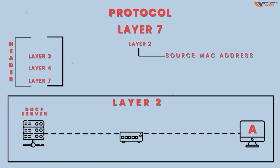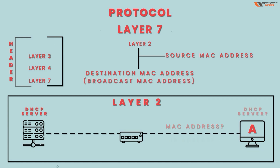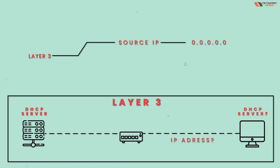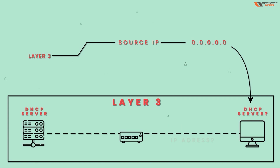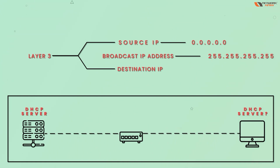At Layer 2, the PC will add its own MAC address as the source MAC — let's call it 'A'. Since the PC doesn't know the DHCP server's MAC address, the destination MAC will be the broadcast MAC address, which is all F's. At Layer 3, since the PC has no IP address yet, the source IP will be all zeros (0.0.0.0), and the destination IP will be the broadcast address 255.255.255.255.